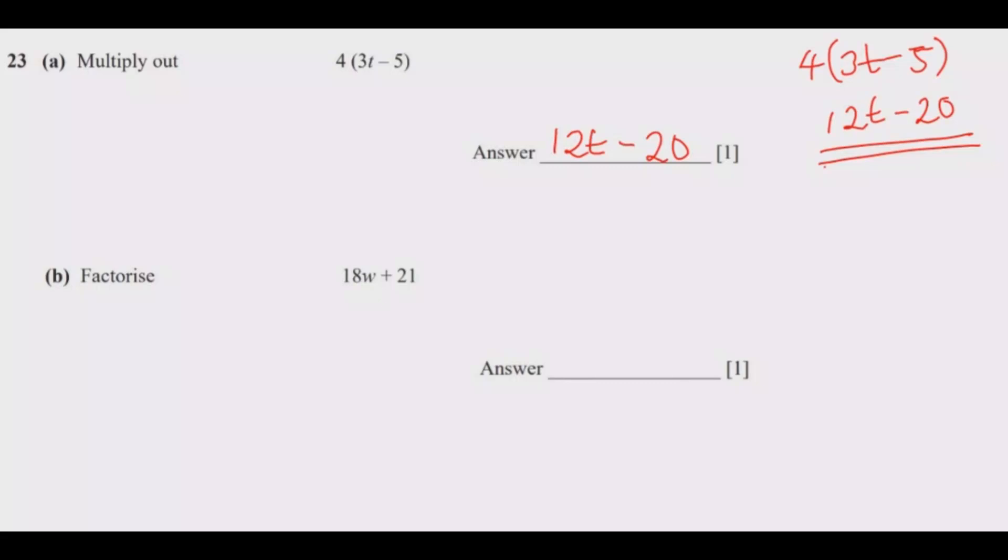We come to question 23b, which is factorize 18w plus 21. So what we're going to do is, we're going to write 18w here plus 21.